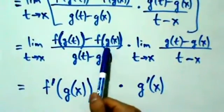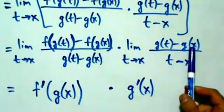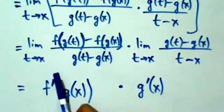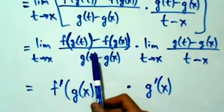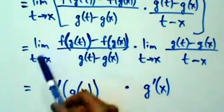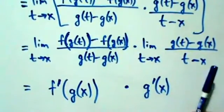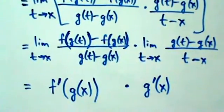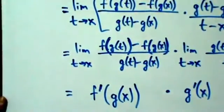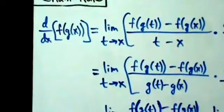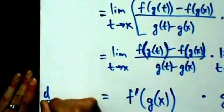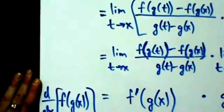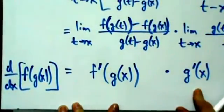So what we've just seen is that d/dx of f(g(x)) equals f′(g(x)) multiplied by g′(x). Again, this proof is flawed because that multiplication step is not really valid — we talked about it already, but it's worth mentioning again: g(t) might be equal to g(x) somewhere.